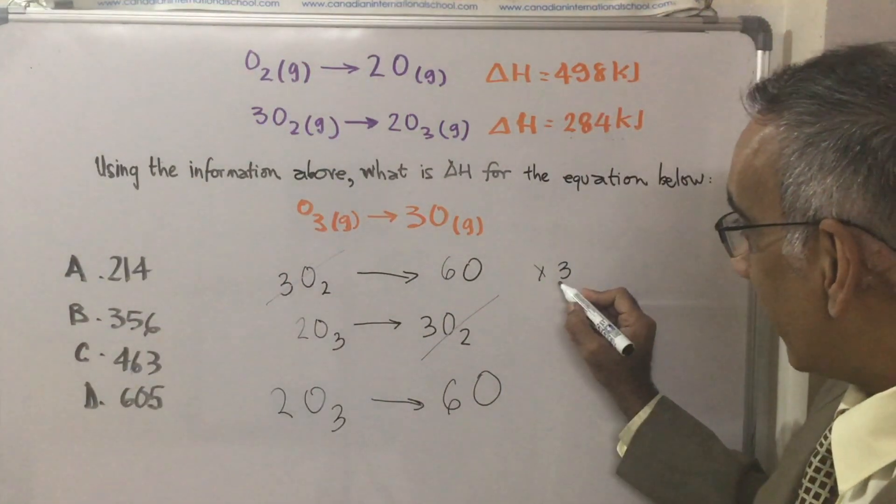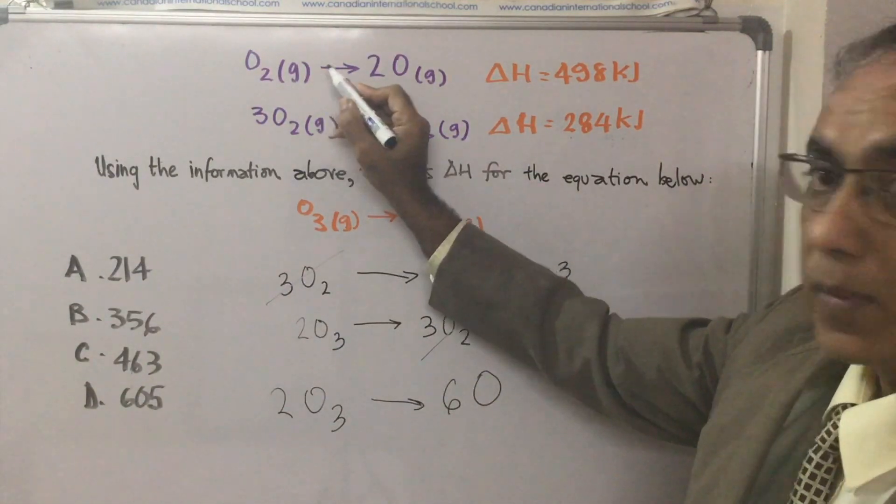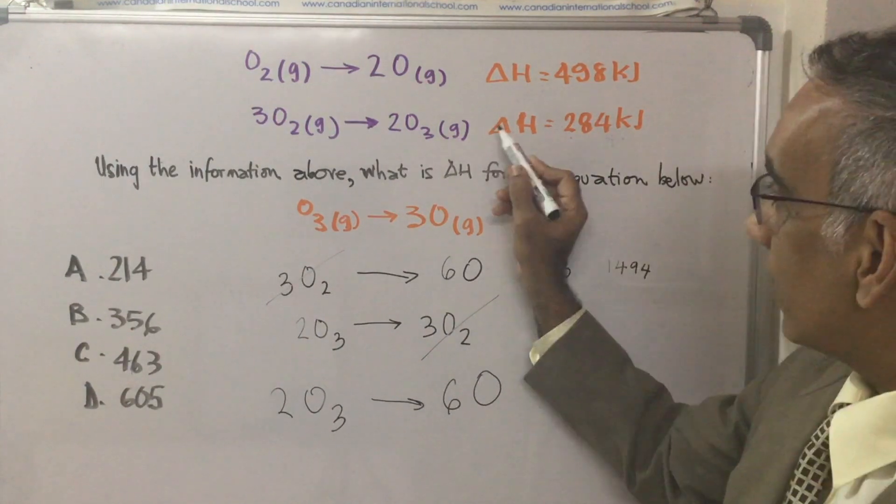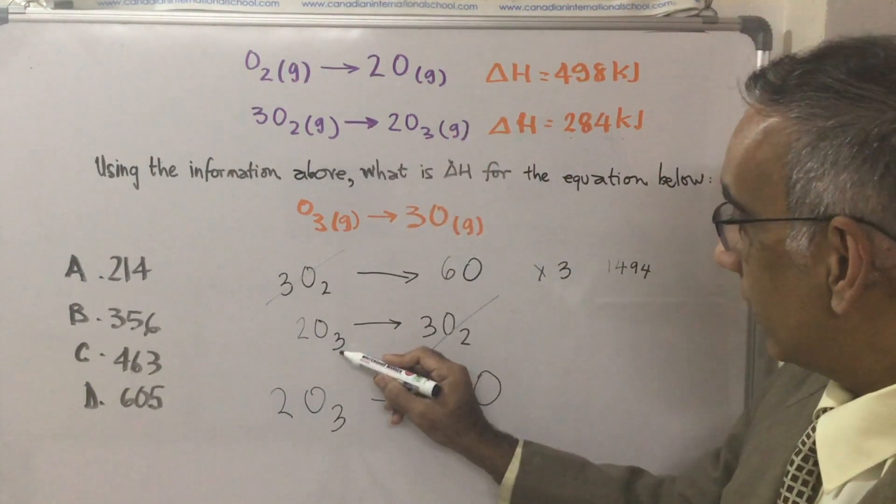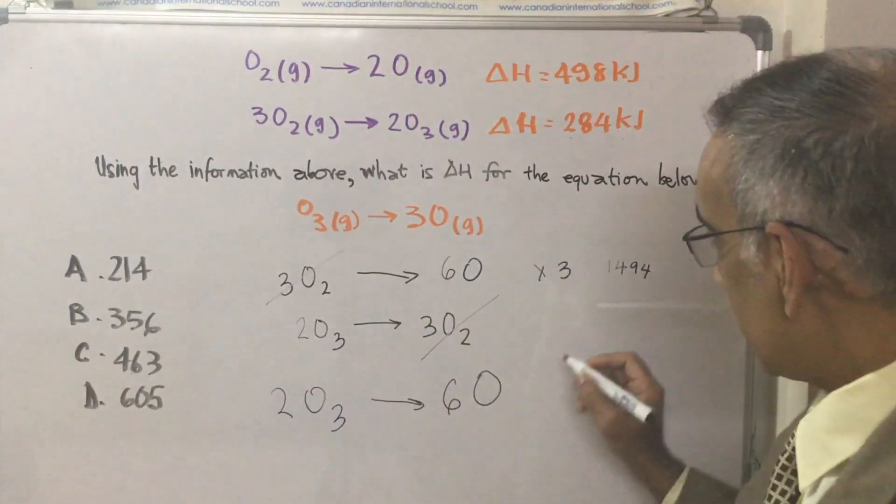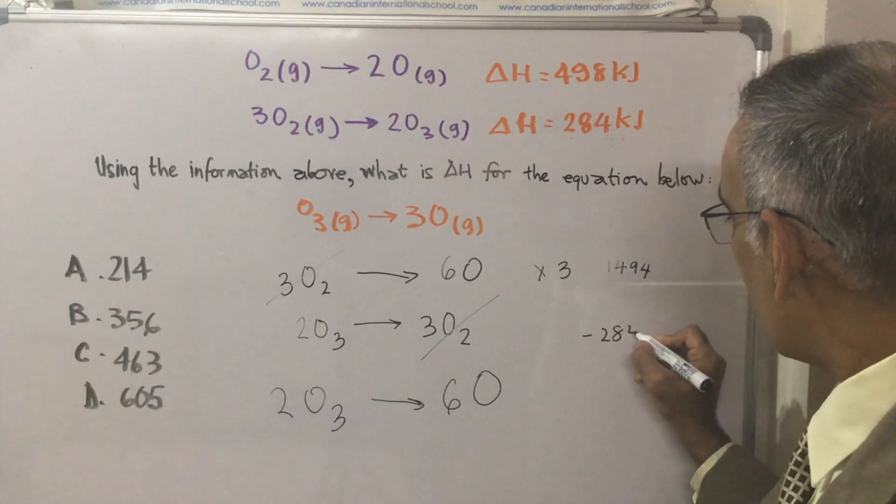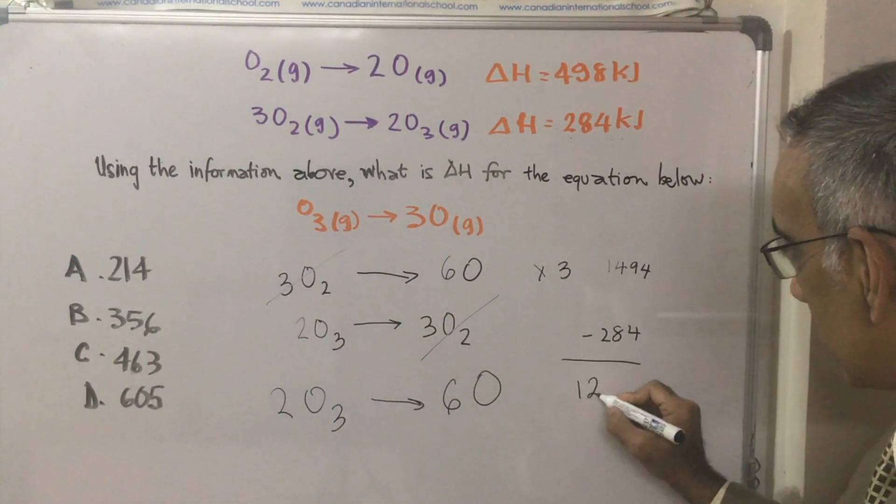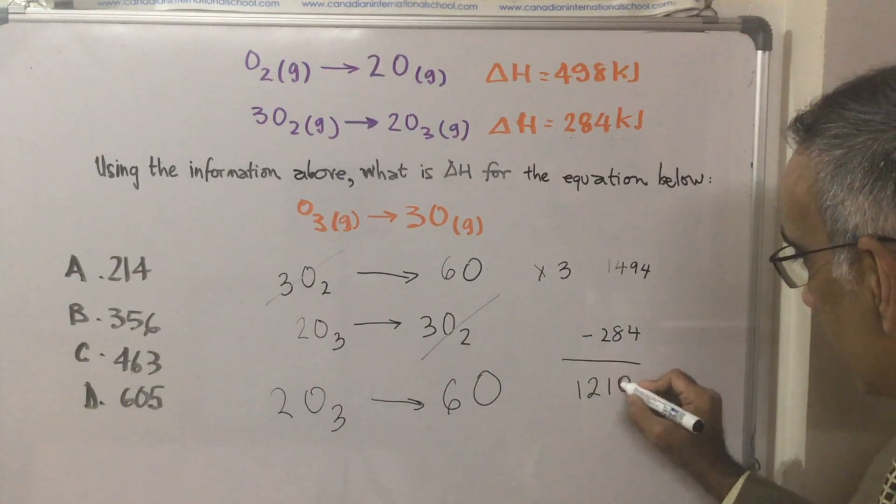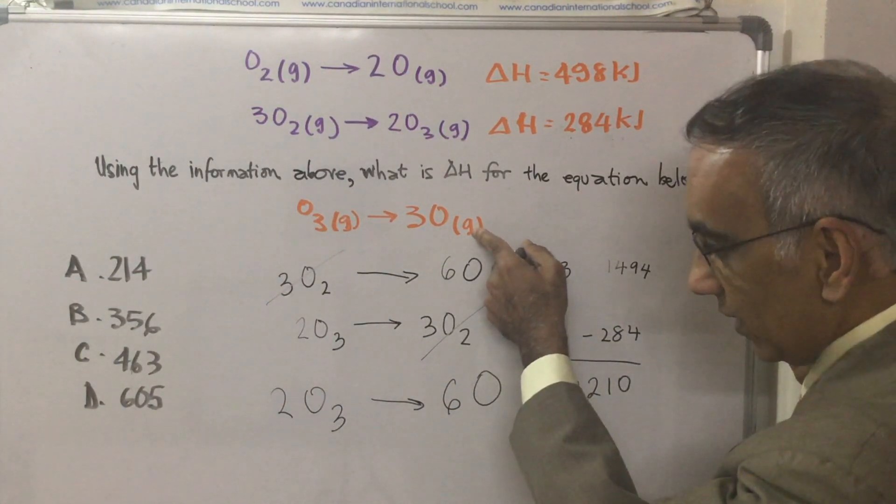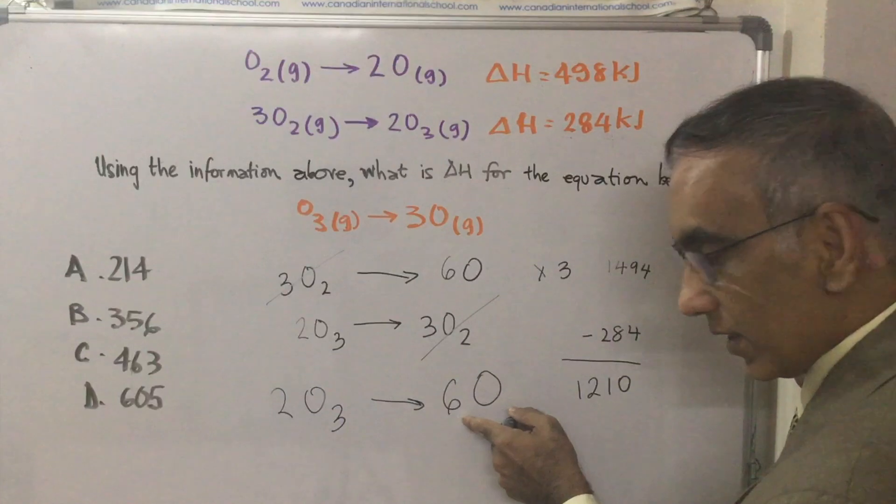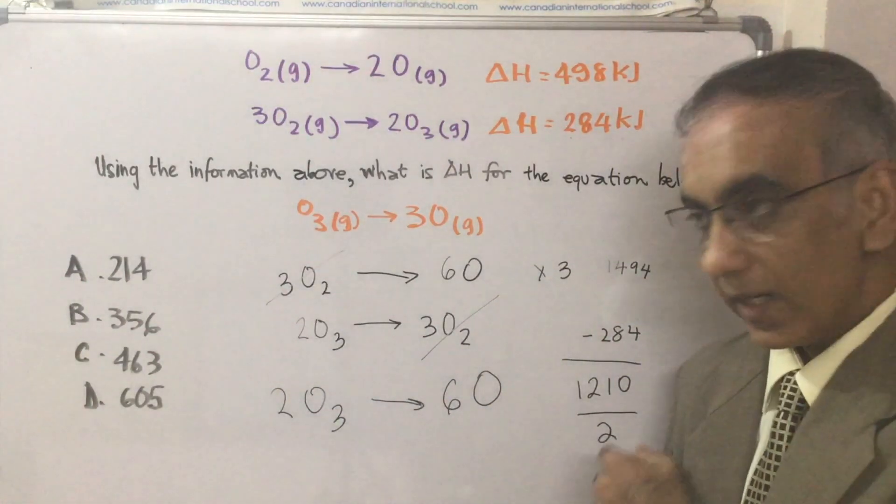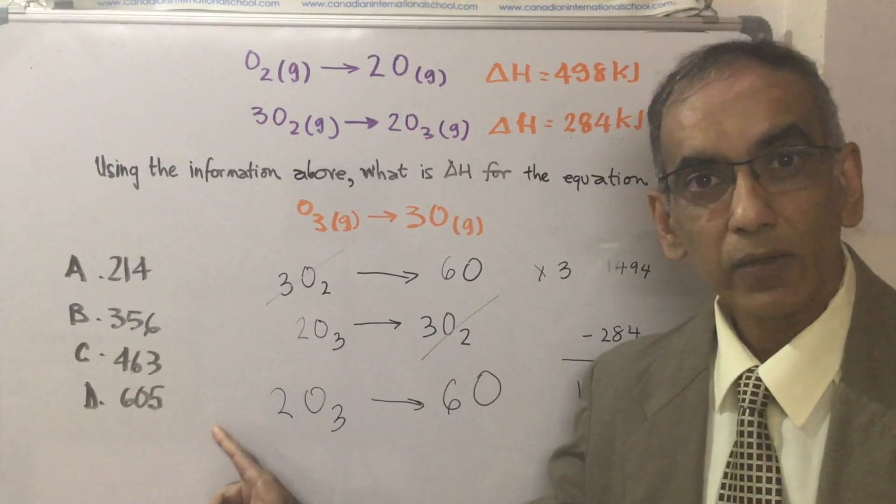And we multiply this by three. This here was multiplied by three. So that total is 1494. And this one here, 2O₃, that was reversed. So that's minus 284. Taking the sum of these two comes to 1210. But then remembering that this is half of this, we've got to divide by two. And again, it confirms the answer is D, 605.